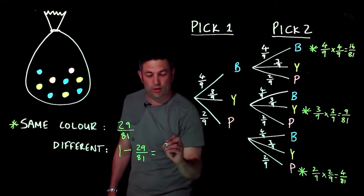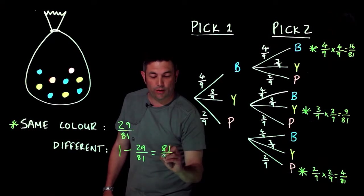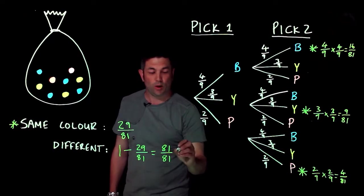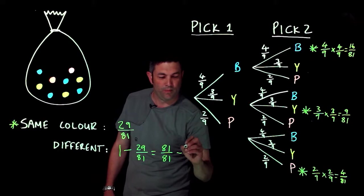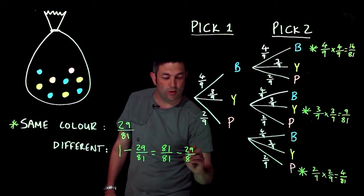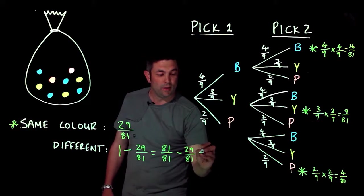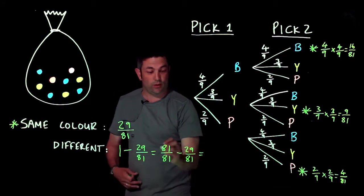That's a whole. So all I've now got to do, and this is a lot easier, is take away those fractions. And 81 take away 29, well that's pretty easy. 81 take away 30 is 51.